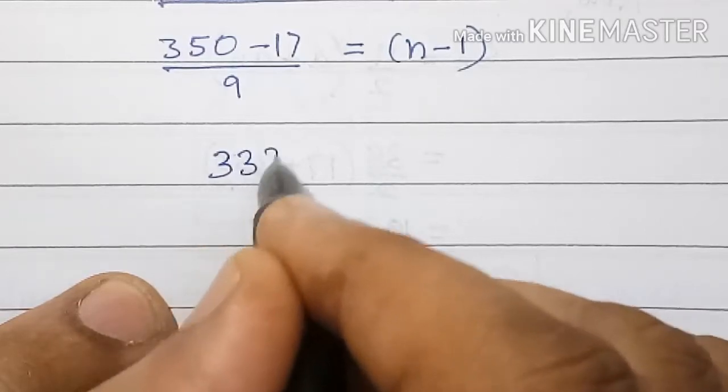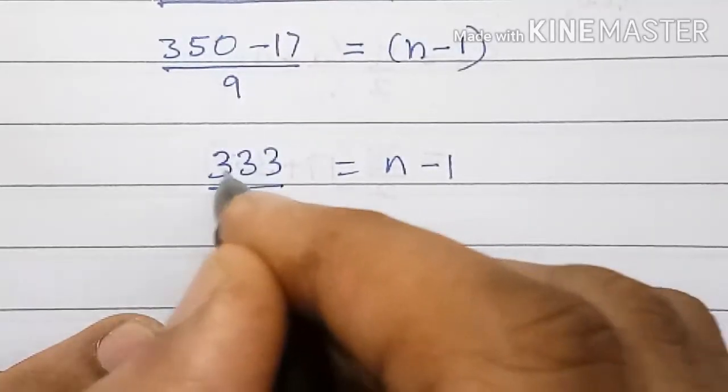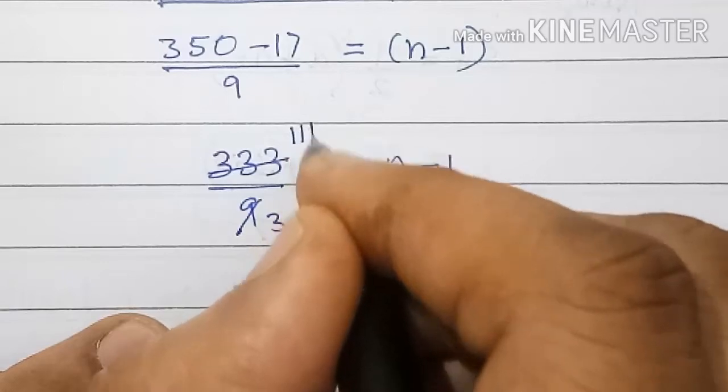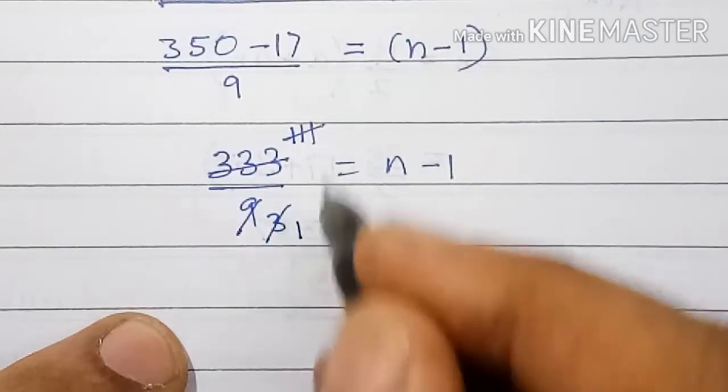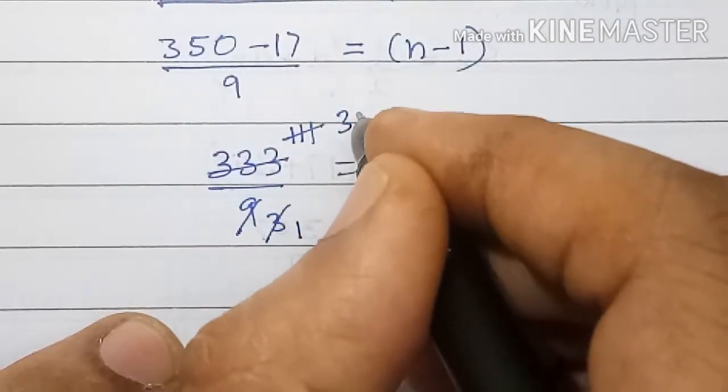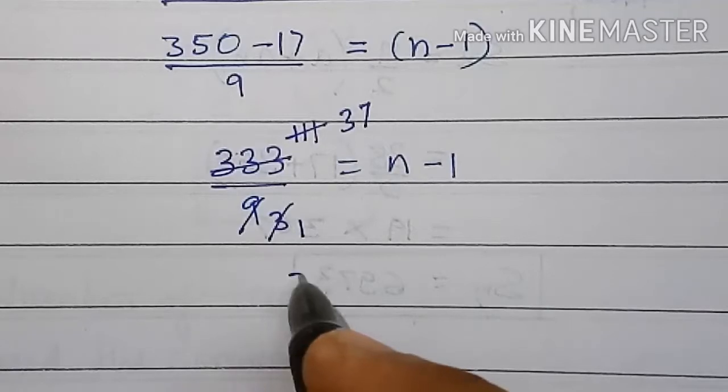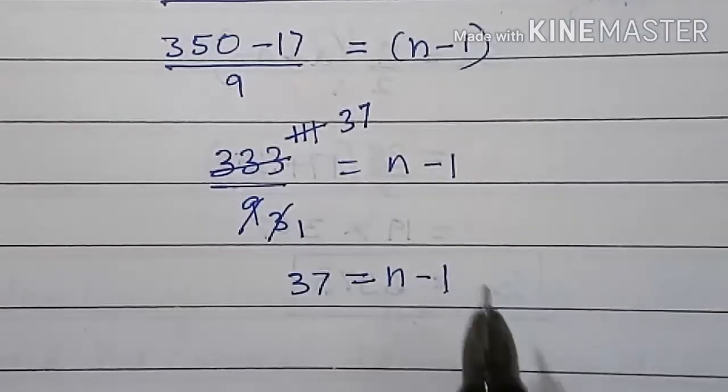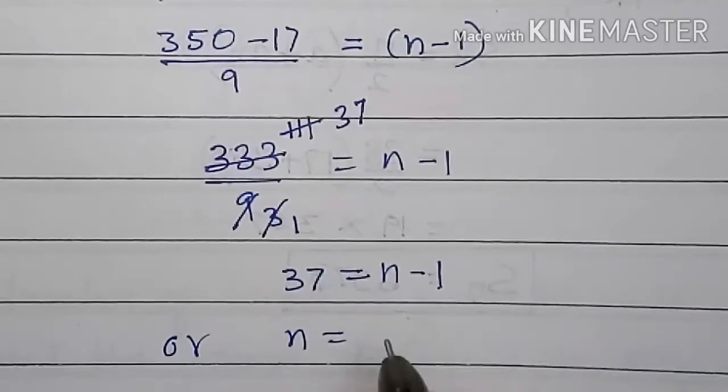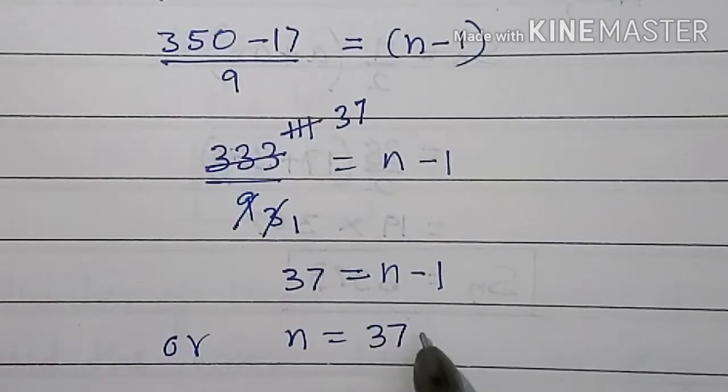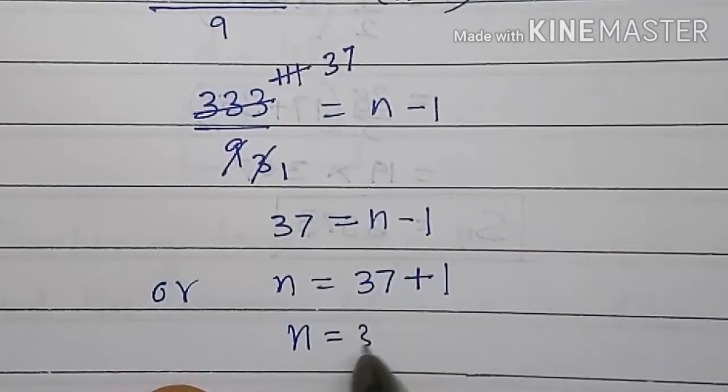So n minus 1, it will become 333 by 9 equal to n minus 1. So 37 equal to n minus 1, or n is equal to 37 plus 1, n equal to 38.